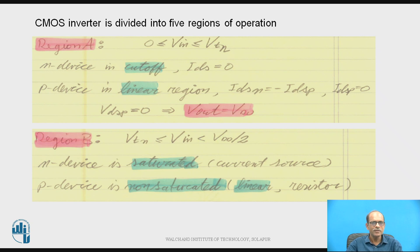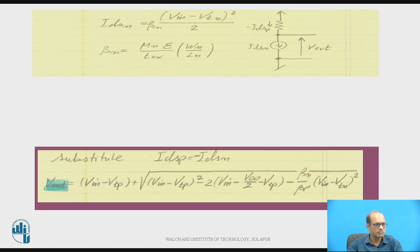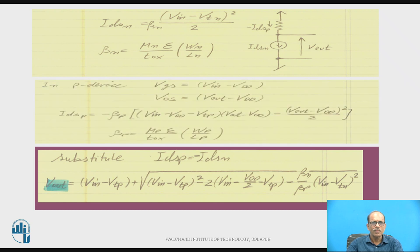For Region B, the condition is that the input voltage is greater than or equal to VTN and less than VDD over 2. In Region B, the N device is saturated and the P device is non-saturated, that is in the resistive region. In the saturation region, the device acts as a current source. The equation for IDSN in saturation uses beta_N = mu * epsilon / TOX * W/L for the NMOS. For PMOS non-saturation, these are the design equations, shown by a resistance.